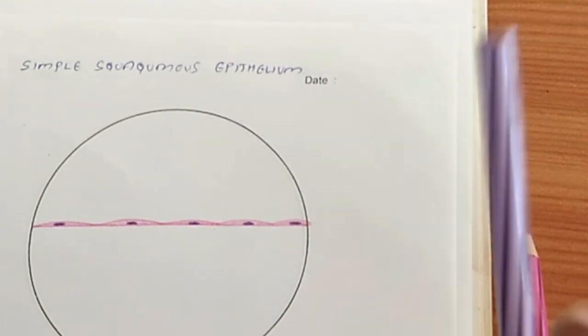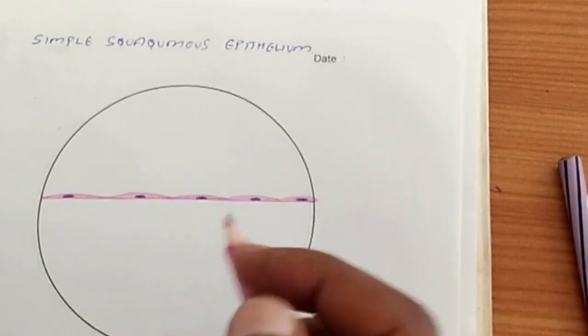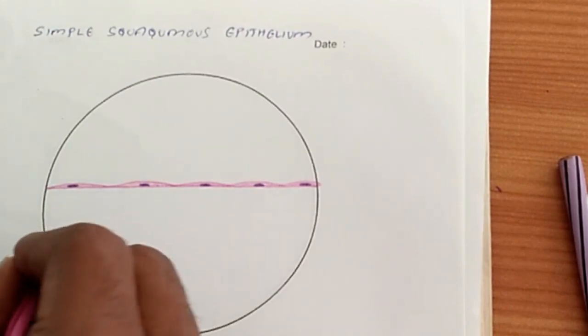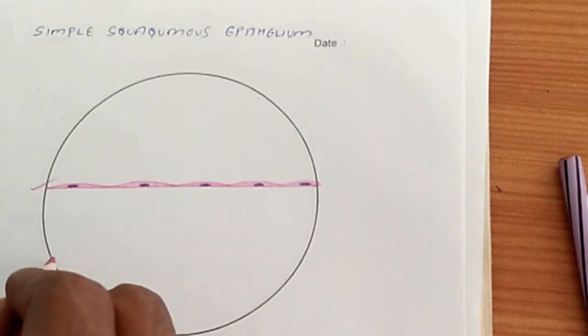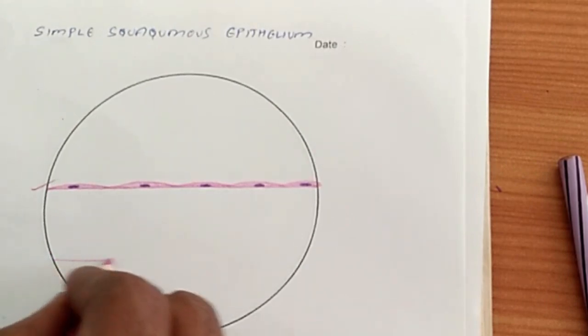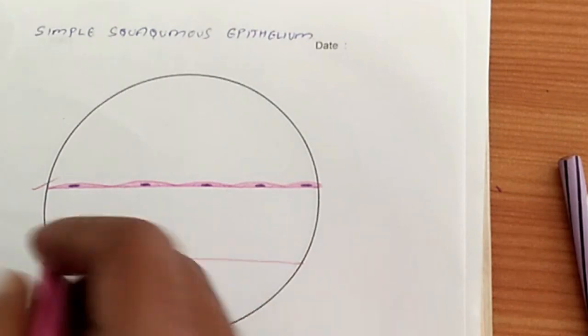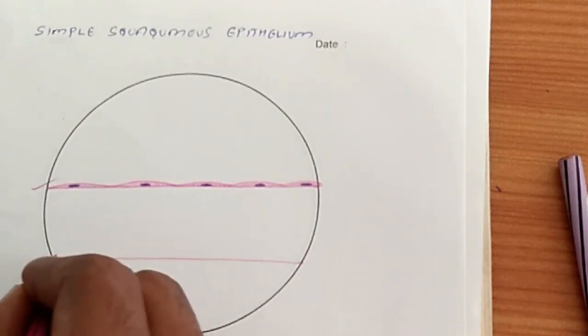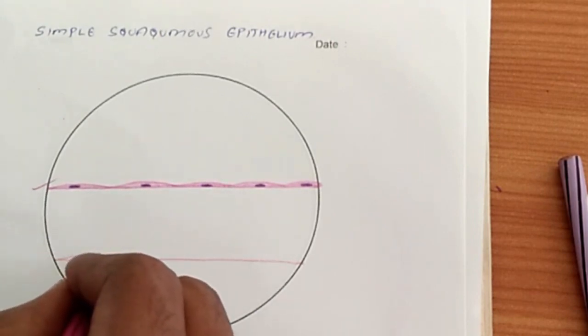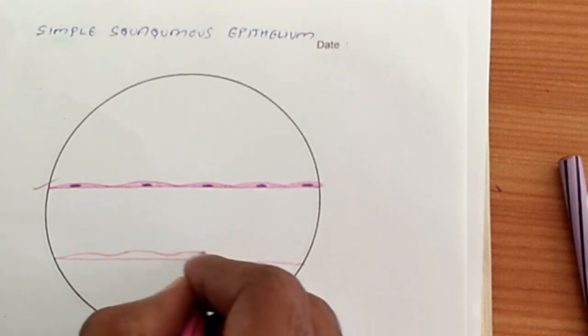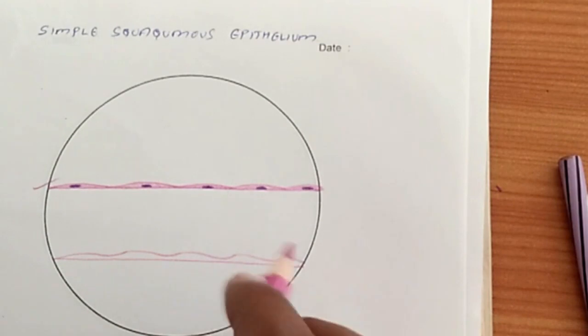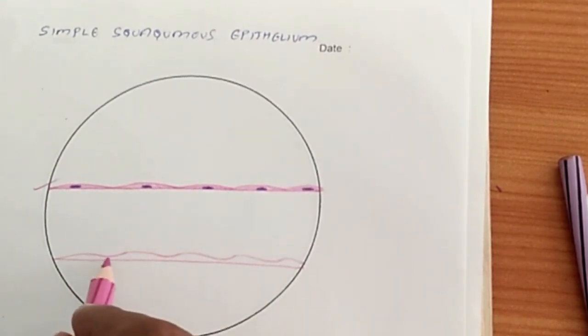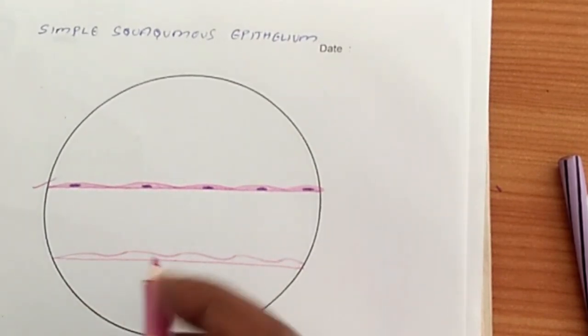Now let me tell you some mistakes that people make. So this is the right one. The first mistake that I have seen, the students draw the basement membrane, then the epithelium and the cells. When they are drawing the cell, what happens is that the cell does not touch the basement membrane, like this. And they shade it. So this is not the correct way. Each cell should touch the basement membrane. This is wrong.